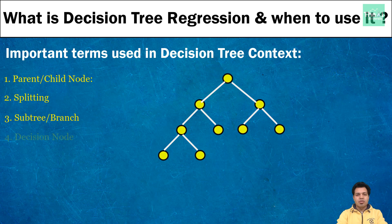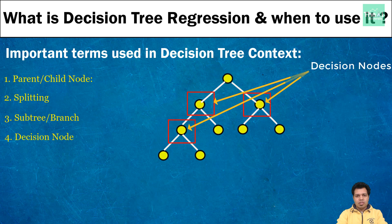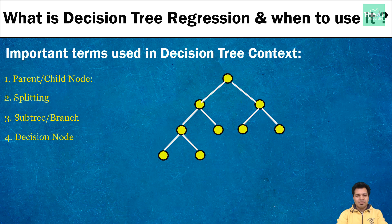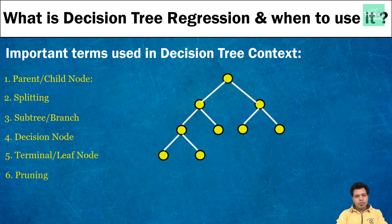The fourth concept is decision node. If we split a subnode into two or more subnodes, then that node will be referred to as a decision node. The fifth concept is terminal or leaf node — the bottom-level nodes which cannot be divided or split further are called terminal leaf nodes. The sixth concept is pruning, which is the process of removing subnodes of a decision tree. If we remove a subnode of a decision node, that is referred to as pruning.